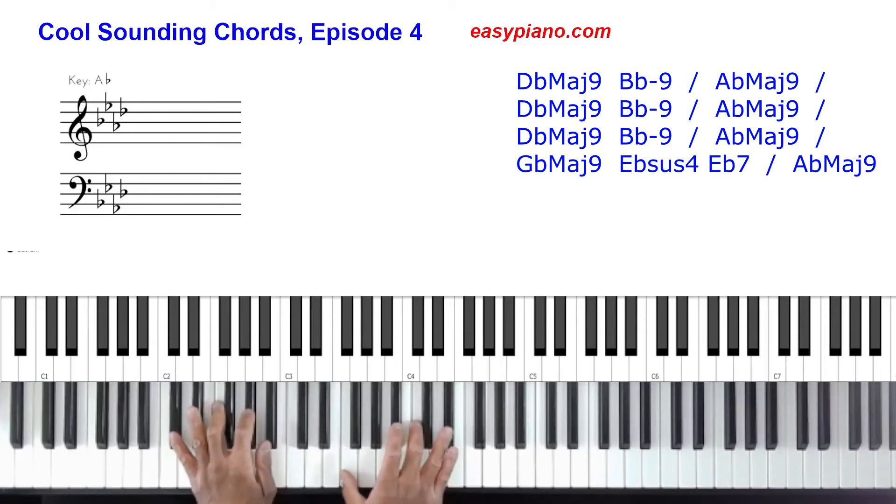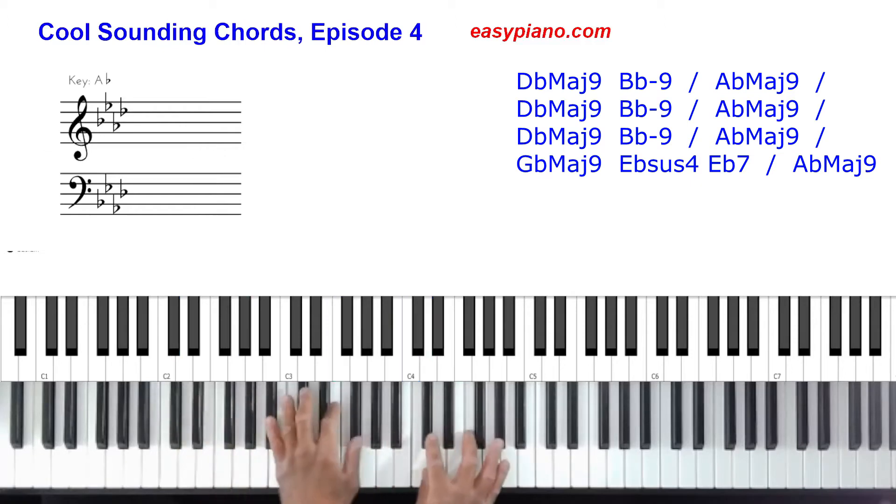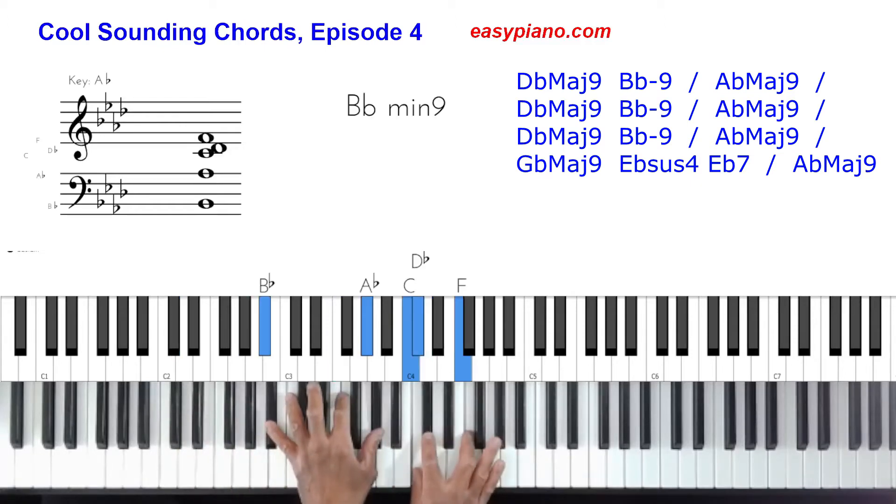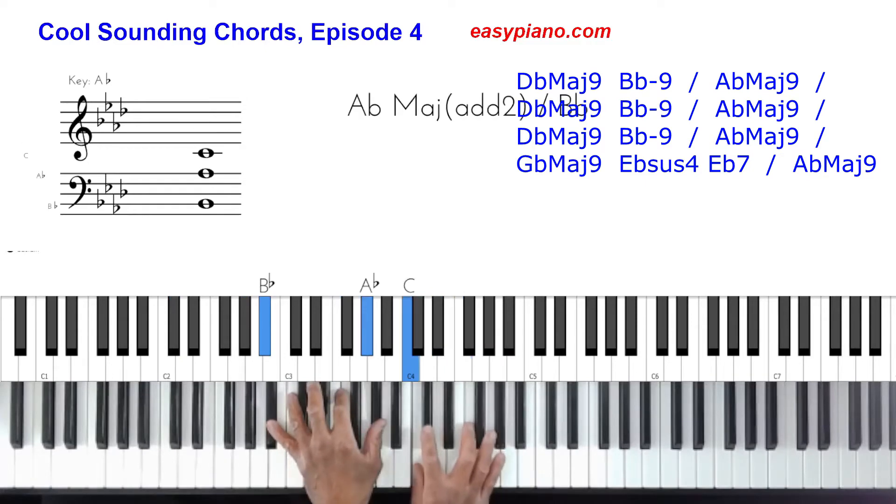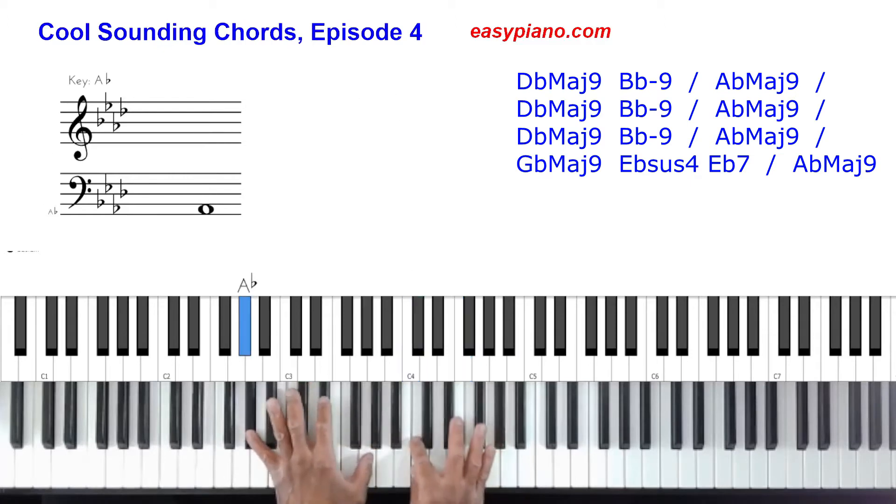The first chord we have is a D flat major nine. The voicing is one, five, three, seven, nine. Second chord we have is a B flat minor nine, which is here. The voicing is one, flat seven, nine, flat three, five. And then the next chord we have is A flat major nine: one, seven, nine, three, five.